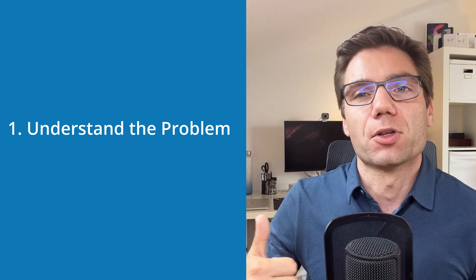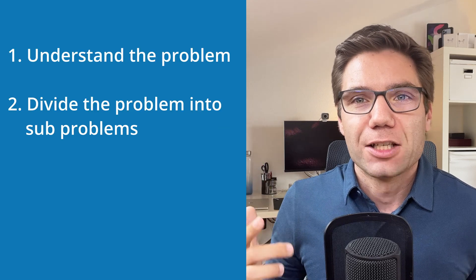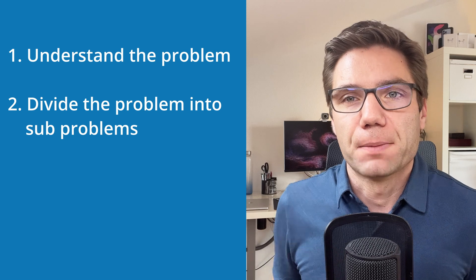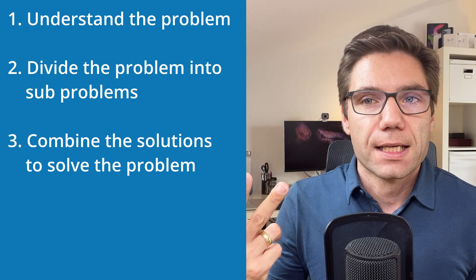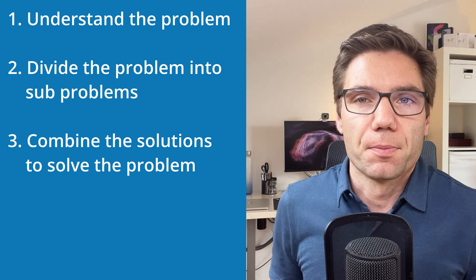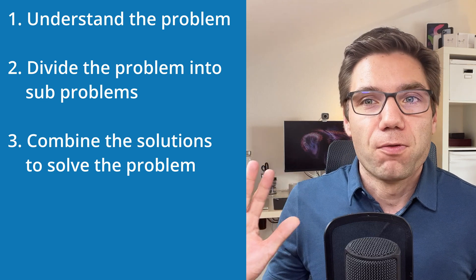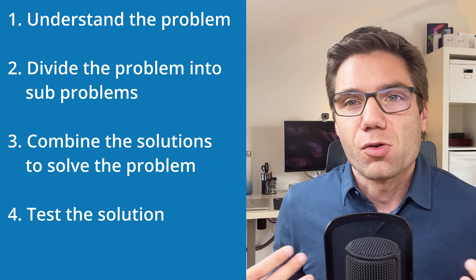To summarize, here are the four steps you can use to solve any problem in software engineering. First: understand the problem — write down what you know, ask questions. Second: divide and conquer — split the big problem into sub-problems that are easier to solve, then solve them individually. Third: think about how you can combine the solutions of the sub-problems into the overall solution. Fourth: do your due diligence — think about all the edge cases and corner cases, invest time in testing your solution, and then try to optimize by mapping parts of your solution to existing algorithms with efficient implementations.